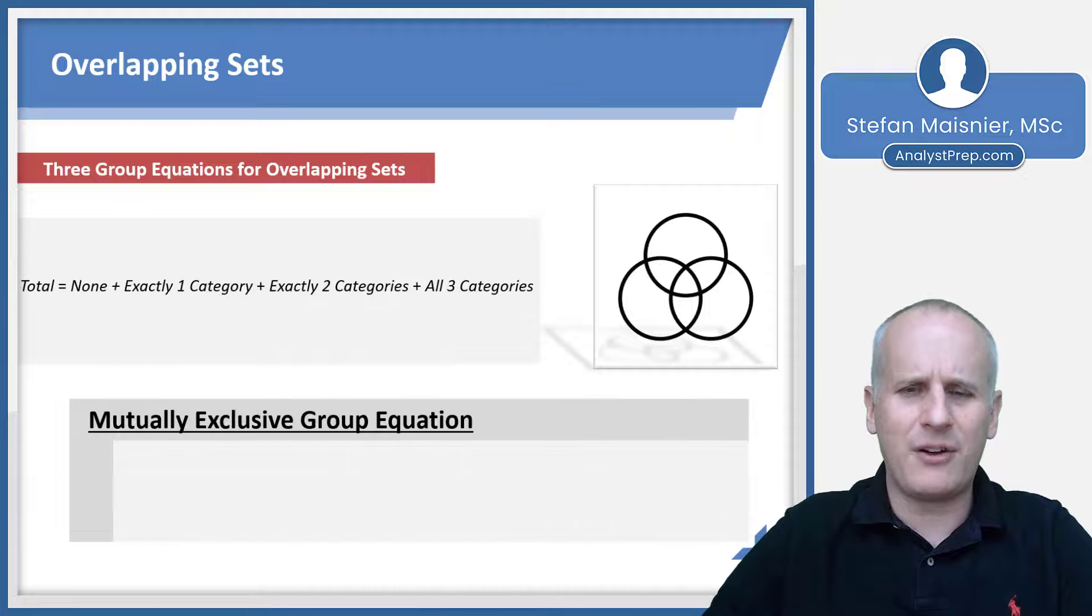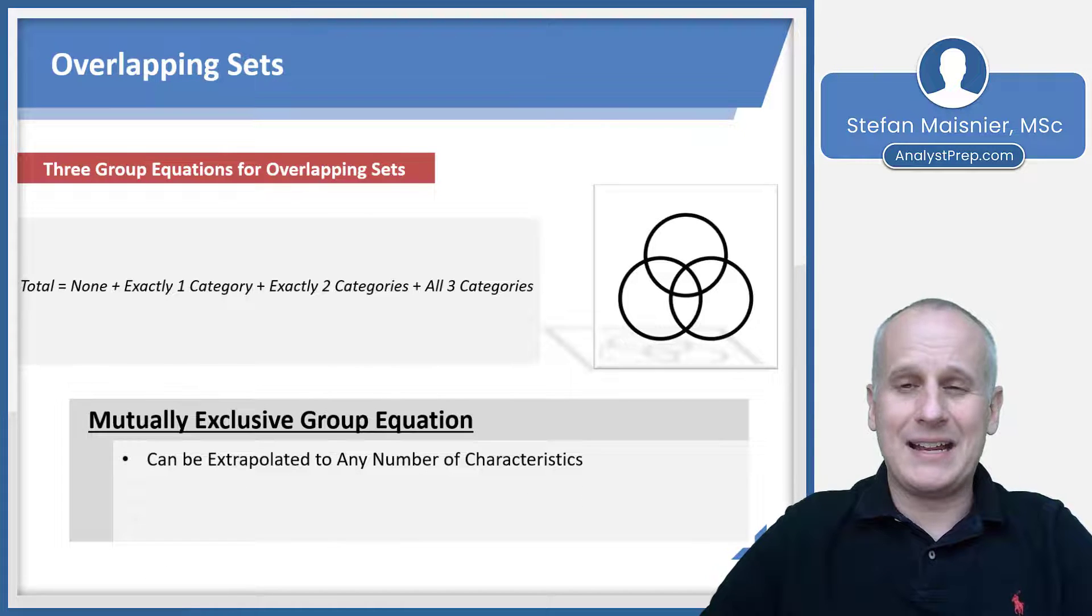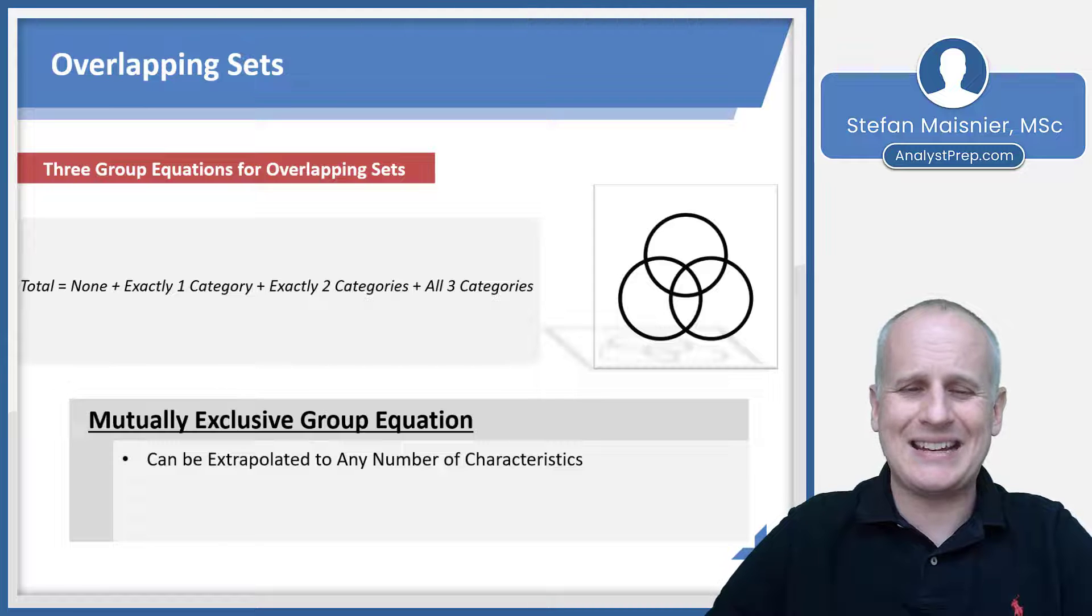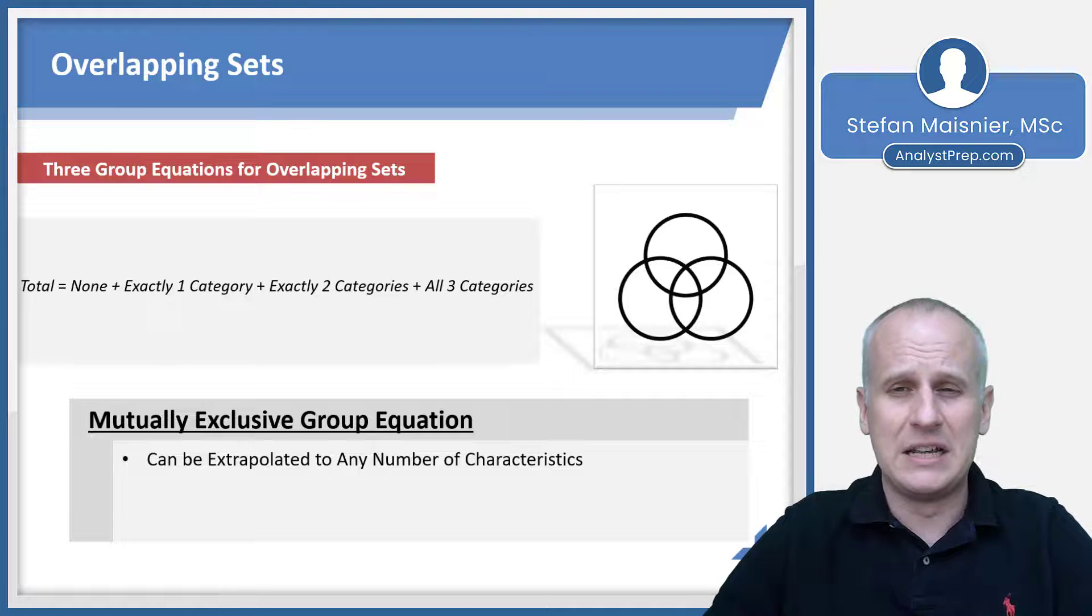We do have one more overlapping set equation. That's the mutually exclusive group equation for three groups. This can be extrapolated to any number of characteristics. So it could be four or five or six or seven or eight, because you can't have something be both in exactly one category and exactly two categories. You can see the equation above: the total is going to be equal to those that are in none of the categories, plus those that are in exactly one category, plus those that are exactly two categories, plus those that are in all three categories, because you can only do one of these categorizations at a time. You can't have Bill be in two categories and three categories exactly at the same time.